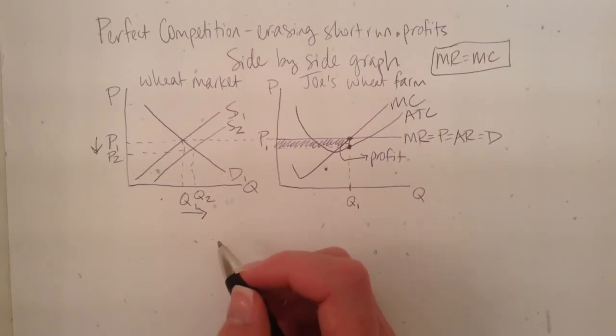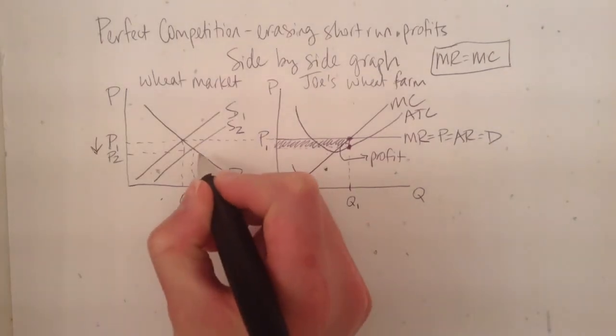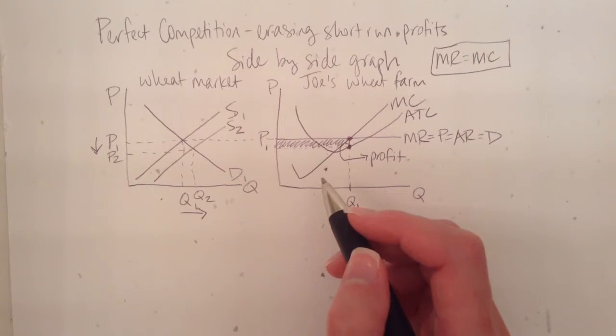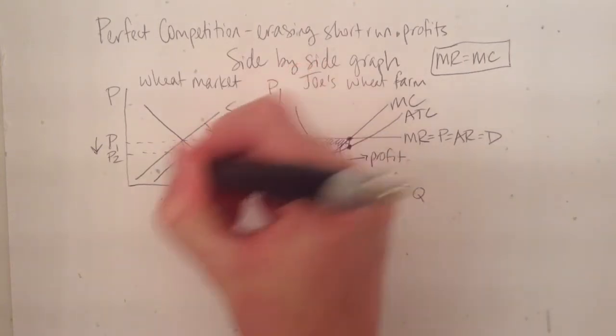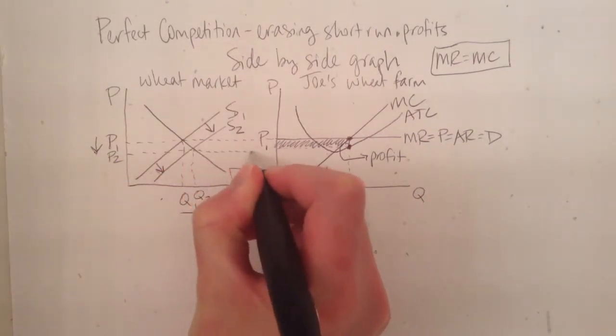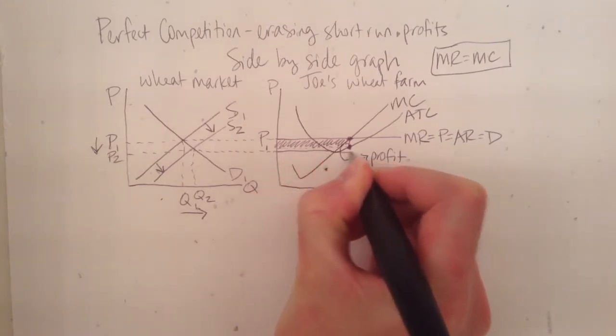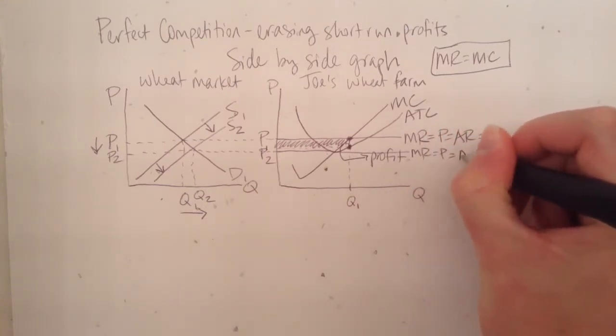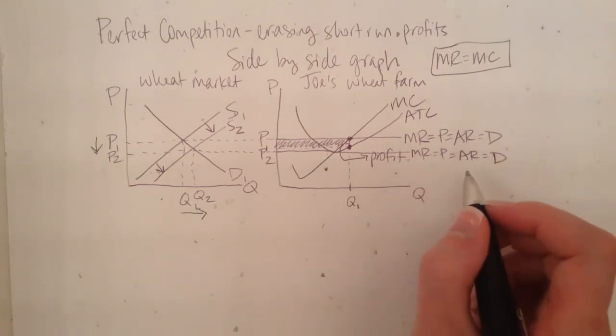But for the wheat farmers, it puts them in a situation where their profits are erased or wiped out, basically. Because they're still price takers. Nothing has changed with that. And nothing has changed with their cost curves either. The only thing that's changed is that more firms have entered the industry, which increased the market supply and decreased the market price. So now we've got our second price curve right here. Mr. Party. It's really important that you label it Mr. Party, because then you're covering all your prices, no matter what the question is asking, basically.